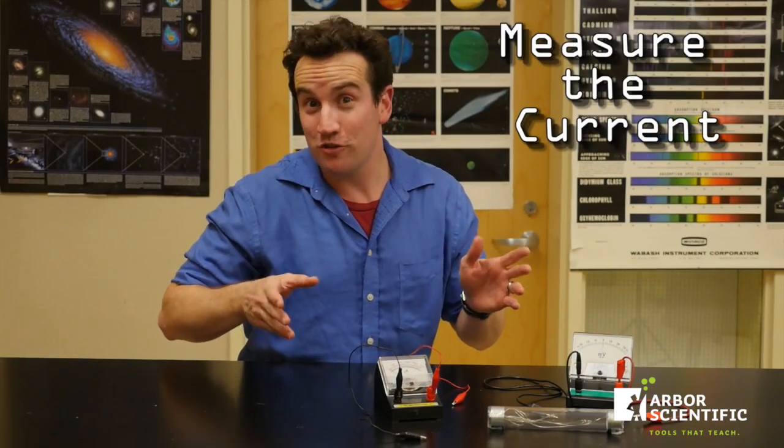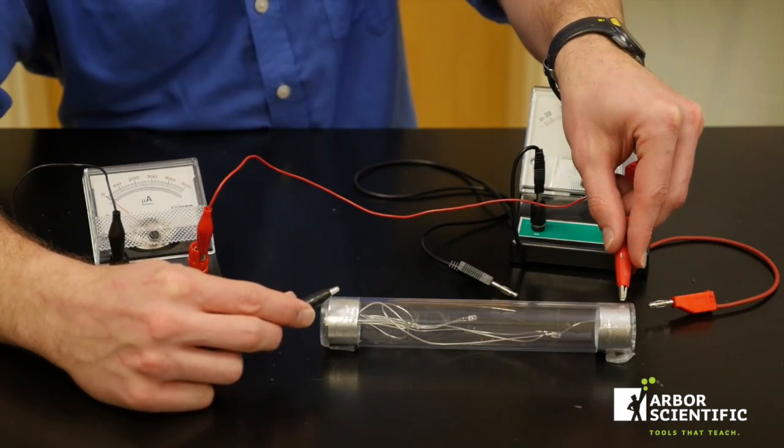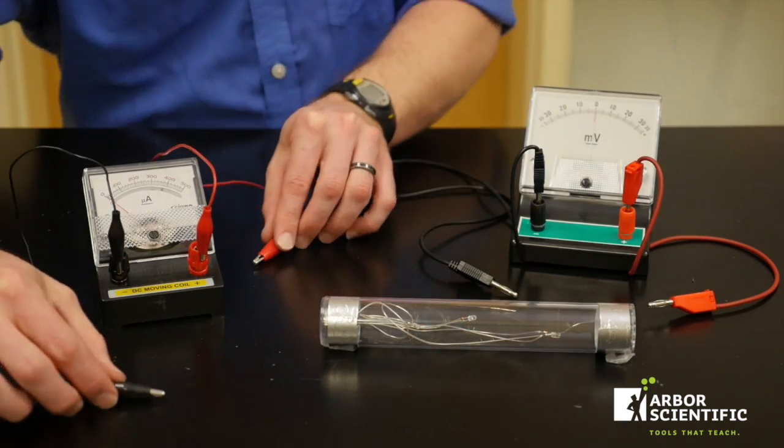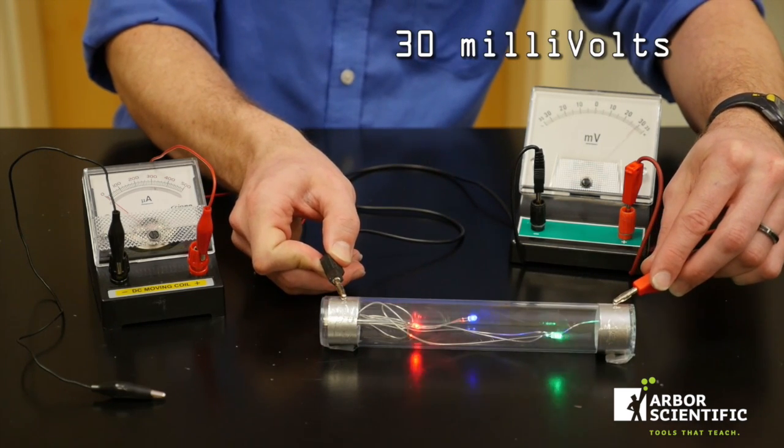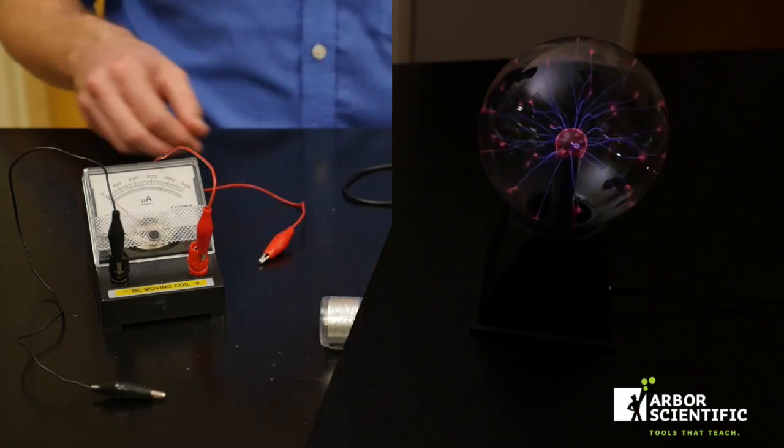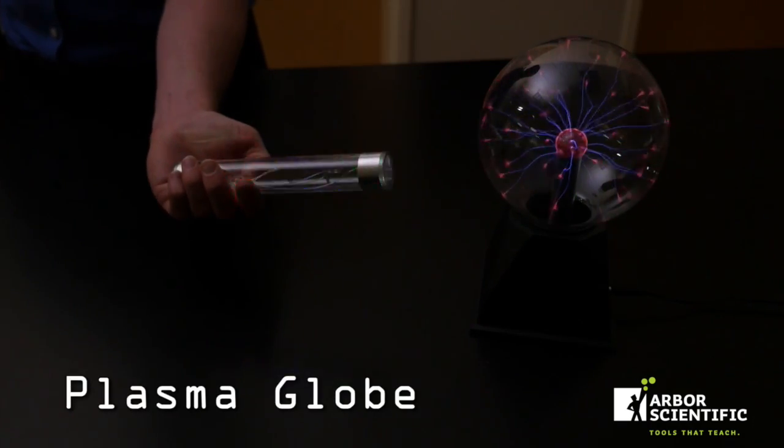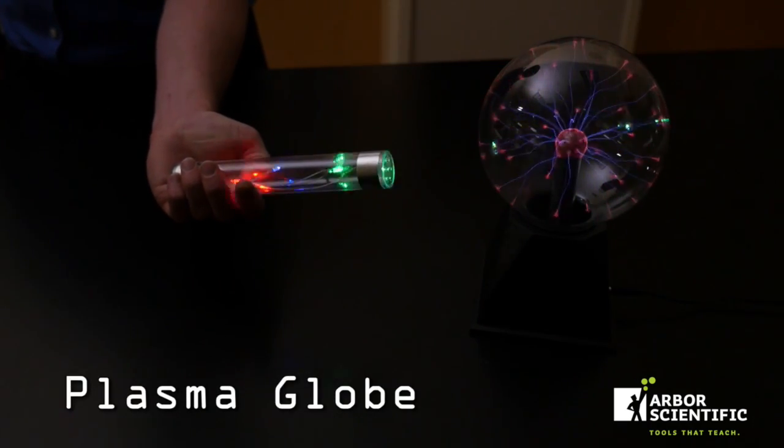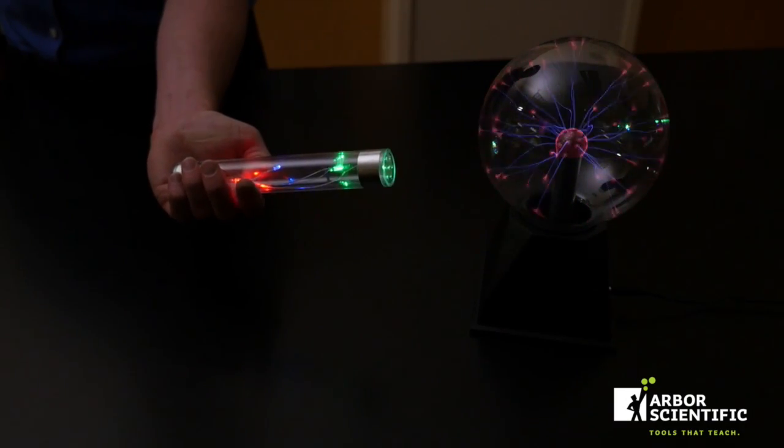This time, instead of using my right hand, I'm powering it with a plasma globe. As the electric field of the plasma globe spreads through the air, it motivates a small current which activates the circuit.